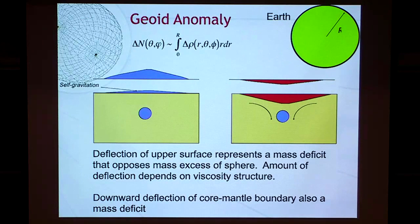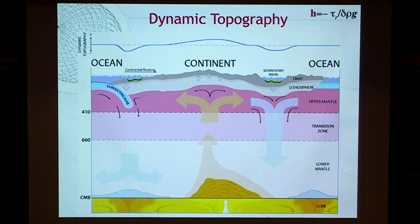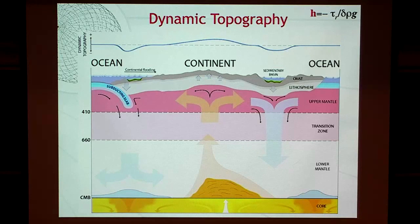Turning to something smaller scale and more geological — dynamic topography is the physical deflection of the surface proportional to the radial stress, which directly depends on buoyancy and inversely proportional to the density contrast and gravitational acceleration. If you've got upwelling, you uplift the continent. If you've got downwellings, depending on the wavelength, you can create sedimentary basins and continental flooding. This goes back to seminal papers by Mitrovica and Beaumont on the flooding of North America in the Cretaceous, and many papers by Mike Gurnis explaining the sea level record.